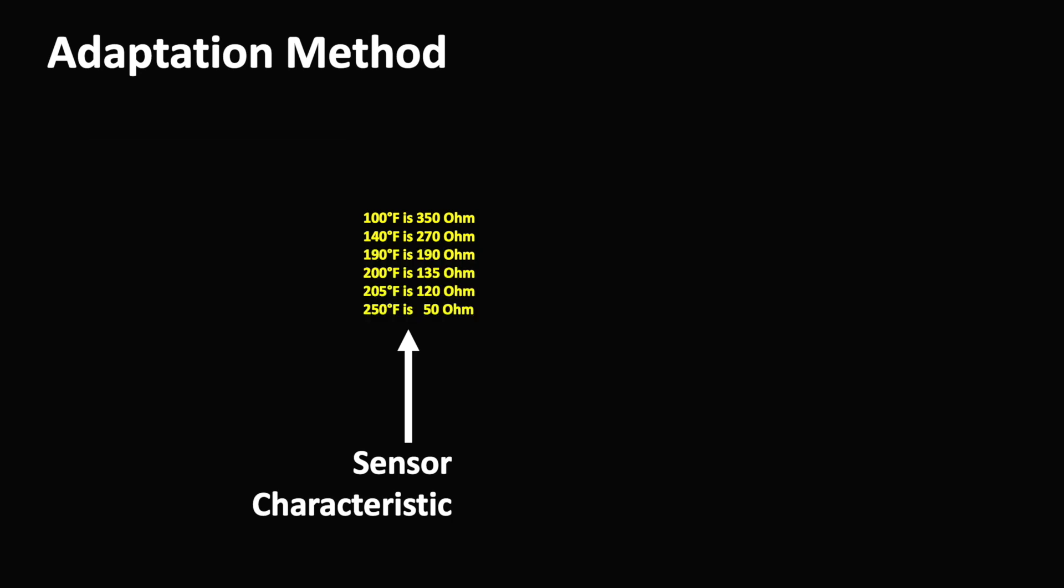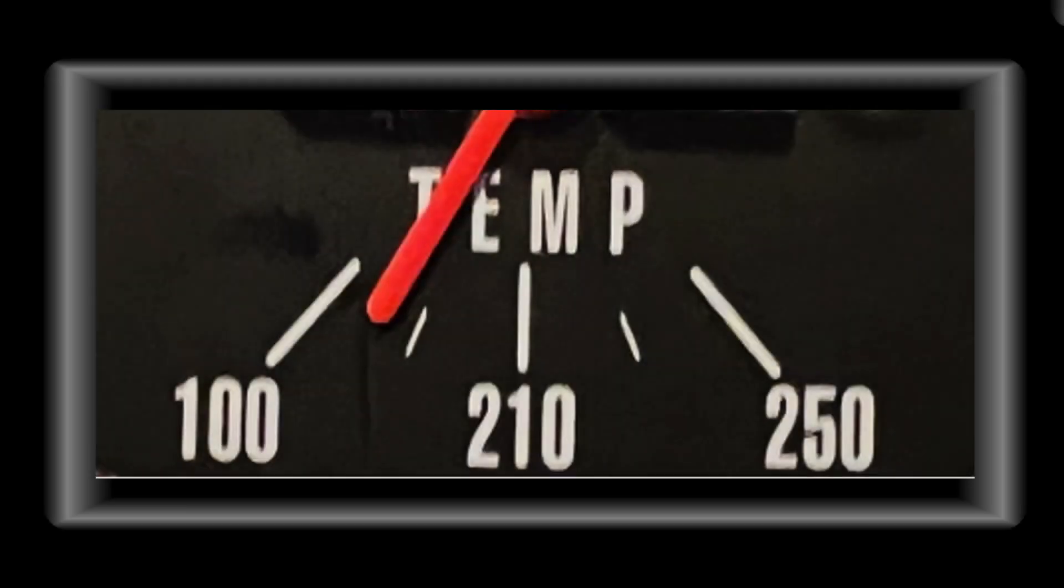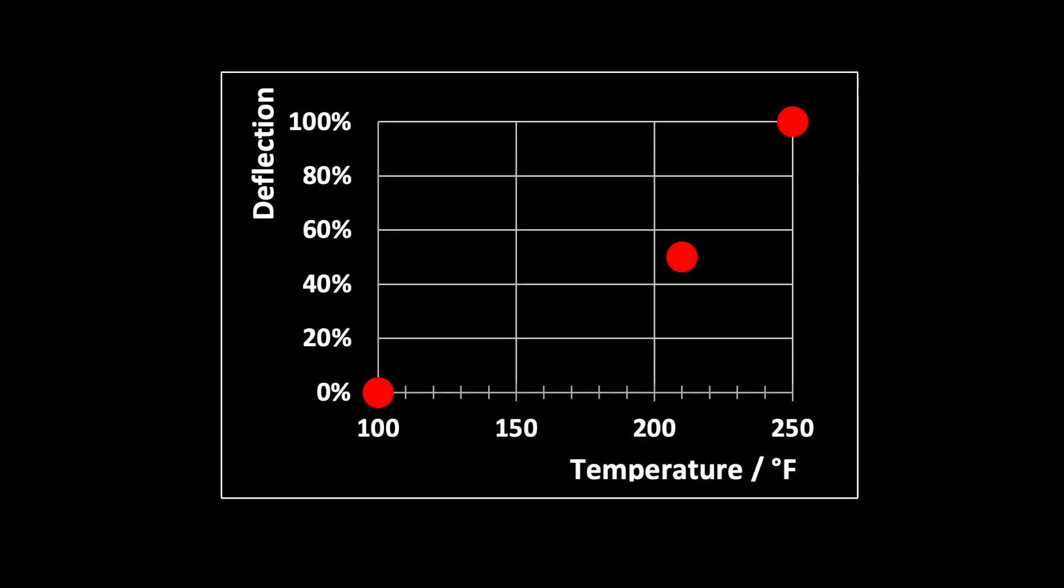In that case, a simple linear function is a good approximation to work within the code. The transformation to a non-linear scale I am demonstrating on an original temperature dial. 100 degrees Fahrenheit corresponds to 0% deflection, 210 degrees corresponds to 50% and 250 degrees water temperature corresponds to 100%.